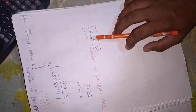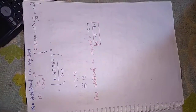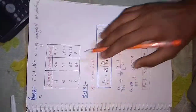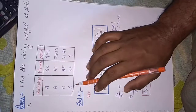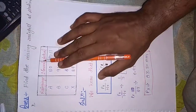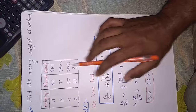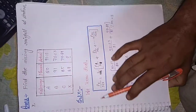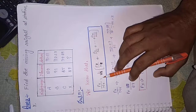तो टोटल में 5 कर देंगे, तो additional number कितना हो जाएगा — दोस्तों यह question missing value वाला देखते हैं। Find the missing value — यहाँ X के सामने actual value find करनी है।